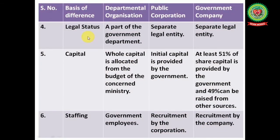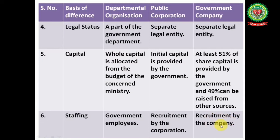Legal status: departmental organization is a part of the government department; public corporation and government company both have a separate legal entity. Capital: in departmental organization the whole capital is allocated from the budget of the concerned ministry; in public corporation initial capital is provided by the government; in government company at least 51 percent of share capital is provided by the government and 49 percent is raised from private institutions or private owners. Staffing: departmental organization uses government employees; recruitment in public corporation and government company is done by the respective organization itself.